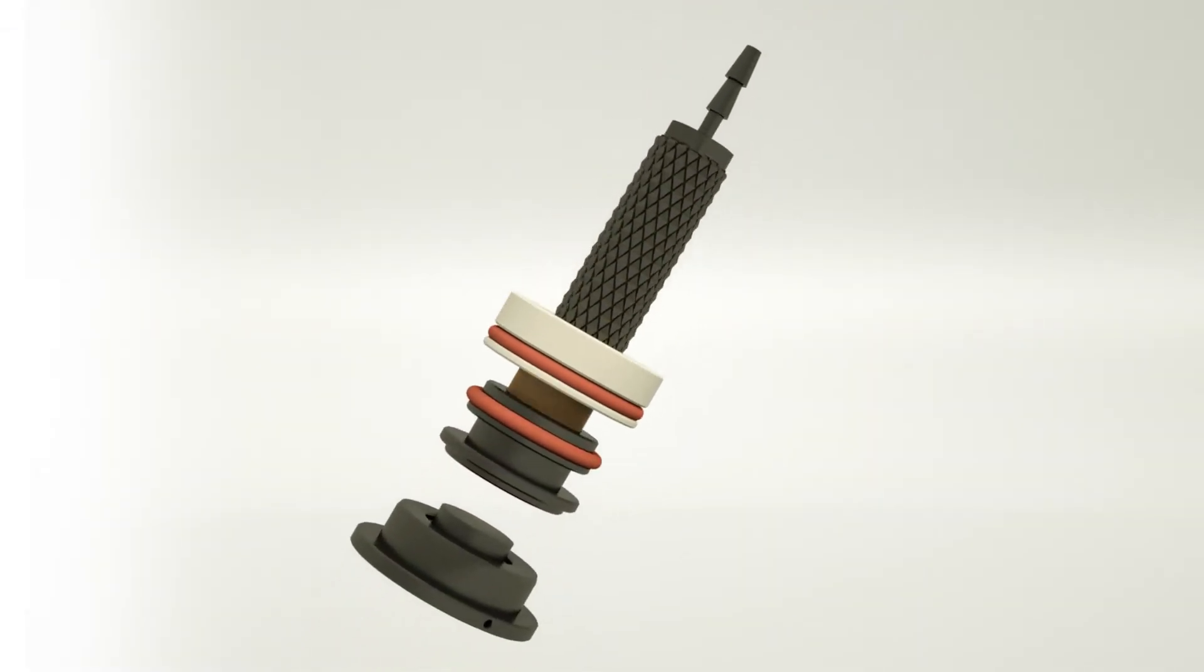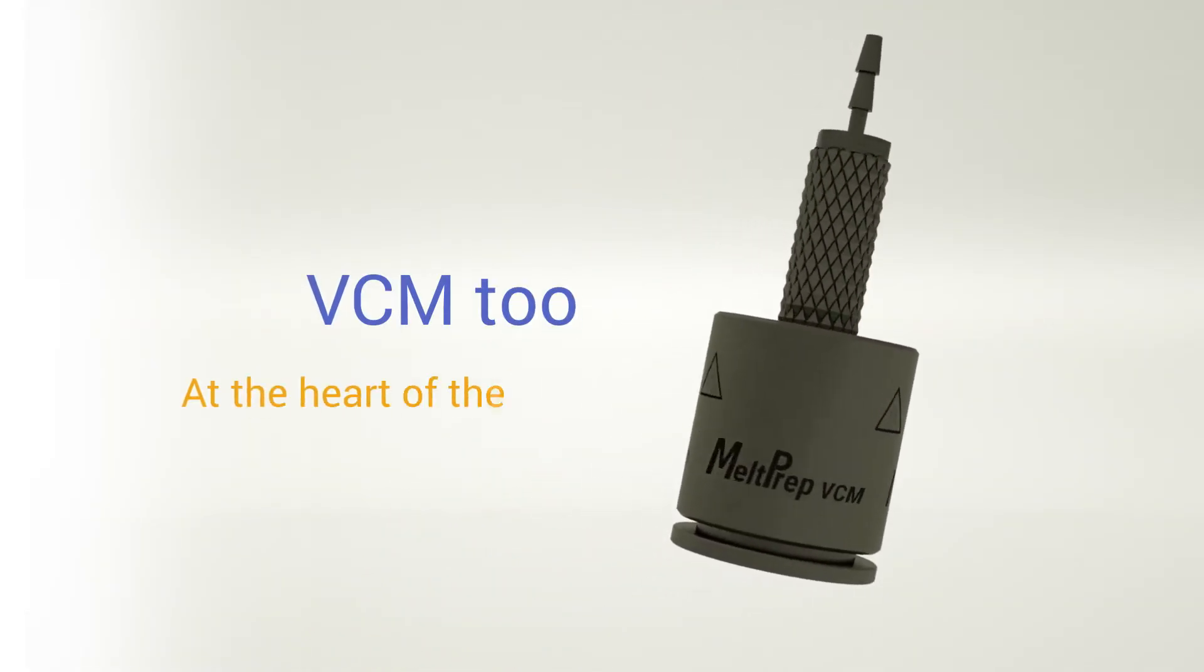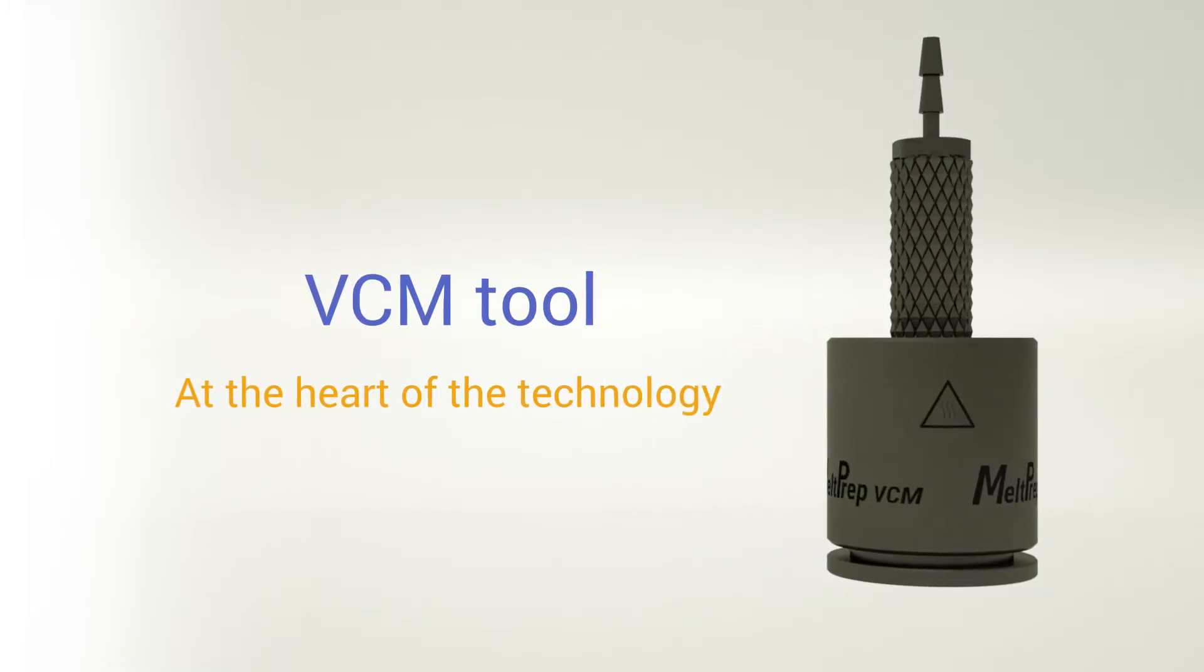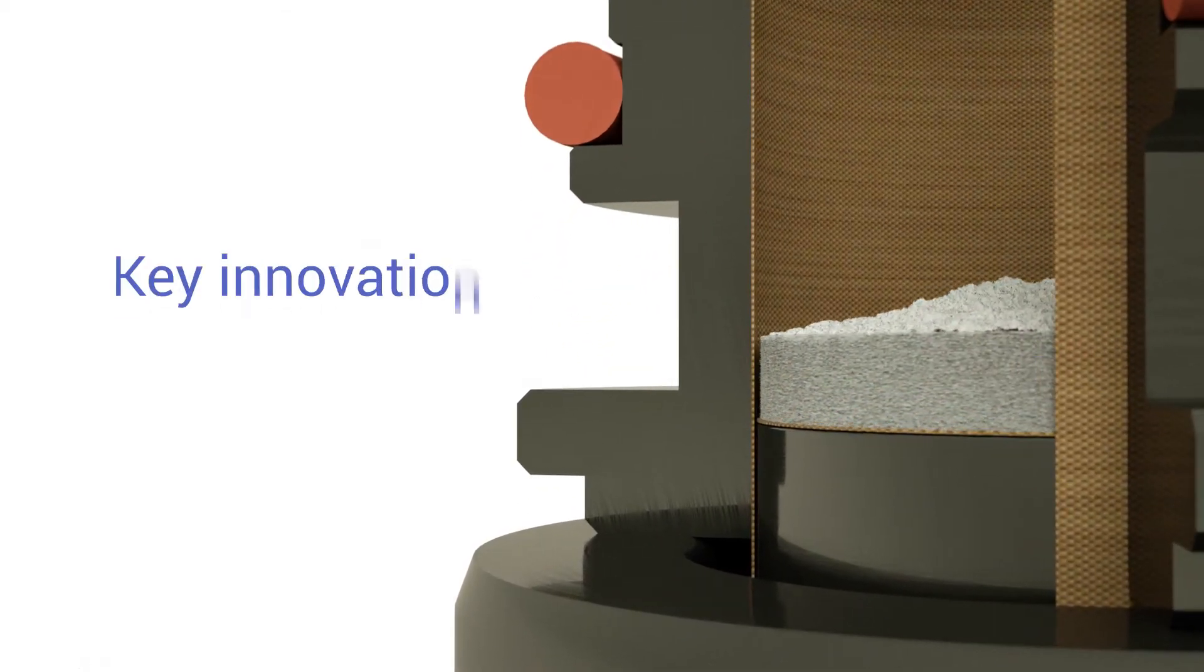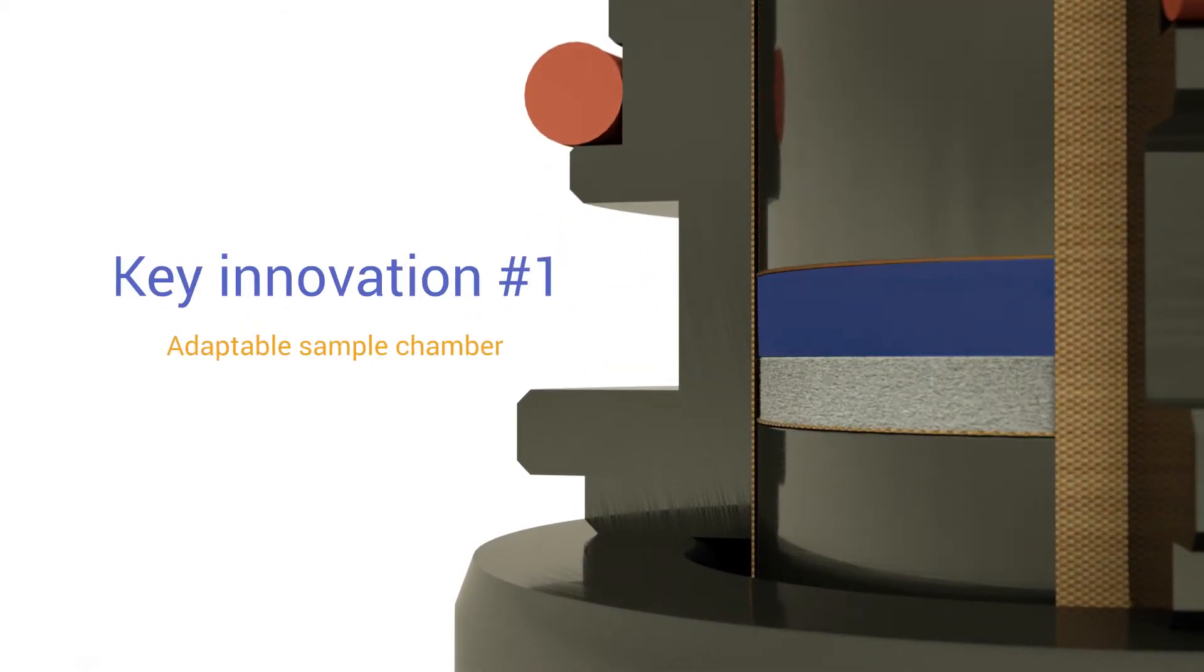At the heart of Meltprep's groundbreaking vacuum compression molding technology lies the VCM tool. The VCM tool's first key innovation is its adaptable sample chamber which adjusts automatically to the amount of material inserted. The result is an entirely lossless sample preparation process.